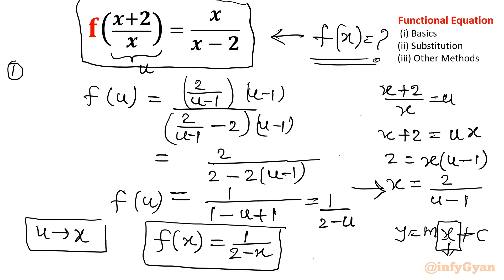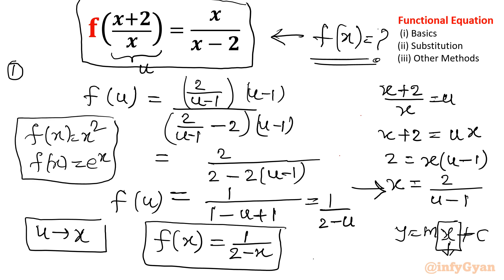Suppose I ask you to write any non-negative output function. In your mind it will flash: f of x equals x squared, or f of x equals e raised to the power x. The question was non-negative output, so in your mind there are two functions — in many cases there can be more than two. This alternative description of a function is known as a functional equation, where you can predict the function but you are not going to find the exact value of an unknown.